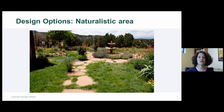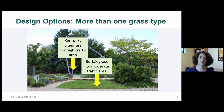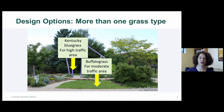Another option is to use these grasses in naturalistic landscapes — if you have an area that transitions into open space or you're looking for a more informal look. You can also use more than one type of grass: for example, buffalo grass in the front lawn for moderate traffic, and Kentucky bluegrass in the backyard for higher traffic tolerance.